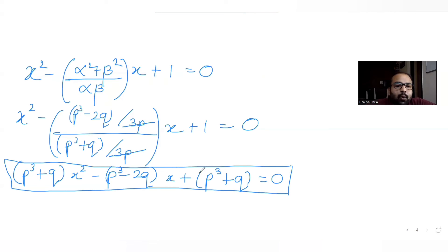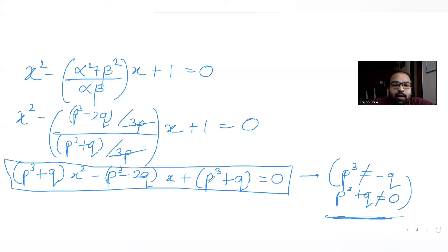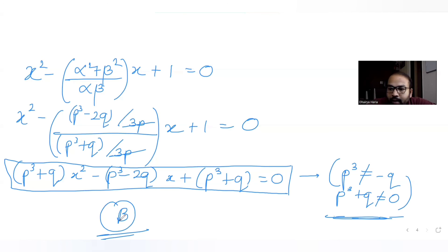We can multiply throughout by (p³ + q) because we were told p³ is not equal to minus q, so p³ + q is not equal to zero. Multiplying both sides by a non-zero value keeps the equation valid. This gives the final answer, which matches option B. I hope you understood how to solve this type of question — see you tomorrow with the next question!